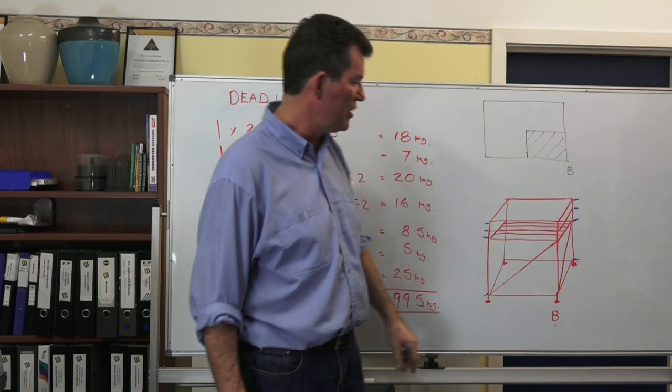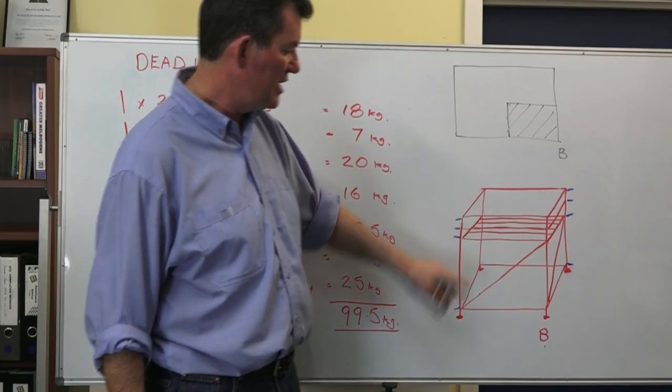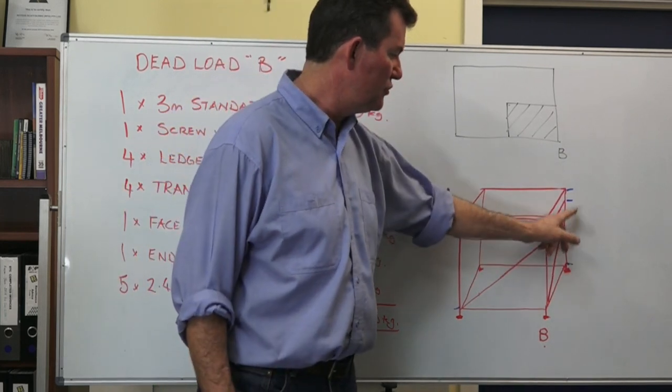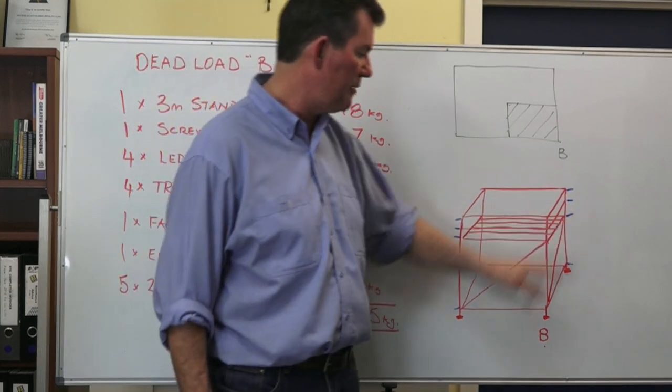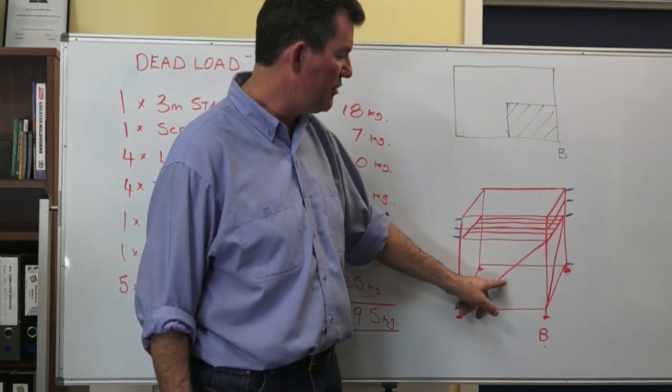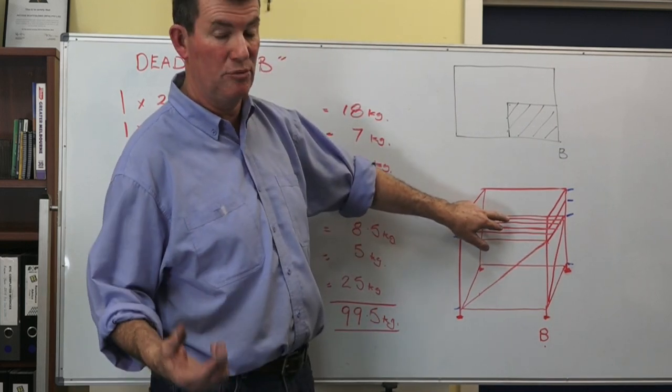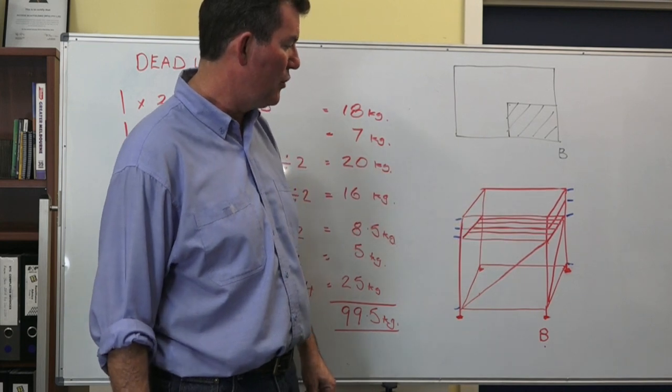And here's my isometric drawing of that scaffold, albeit not very good. And you can see that there are 1, 2, 3, 4 ledges, 1, 2, 3, 4 transoms. We didn't have any 4 foot ledges so we used trannies all the way up the end there. We've got 1 face brace, we've got 1 end brace and we've got 5 2.4 meter steel clamps or steel boards in there on that working platform.